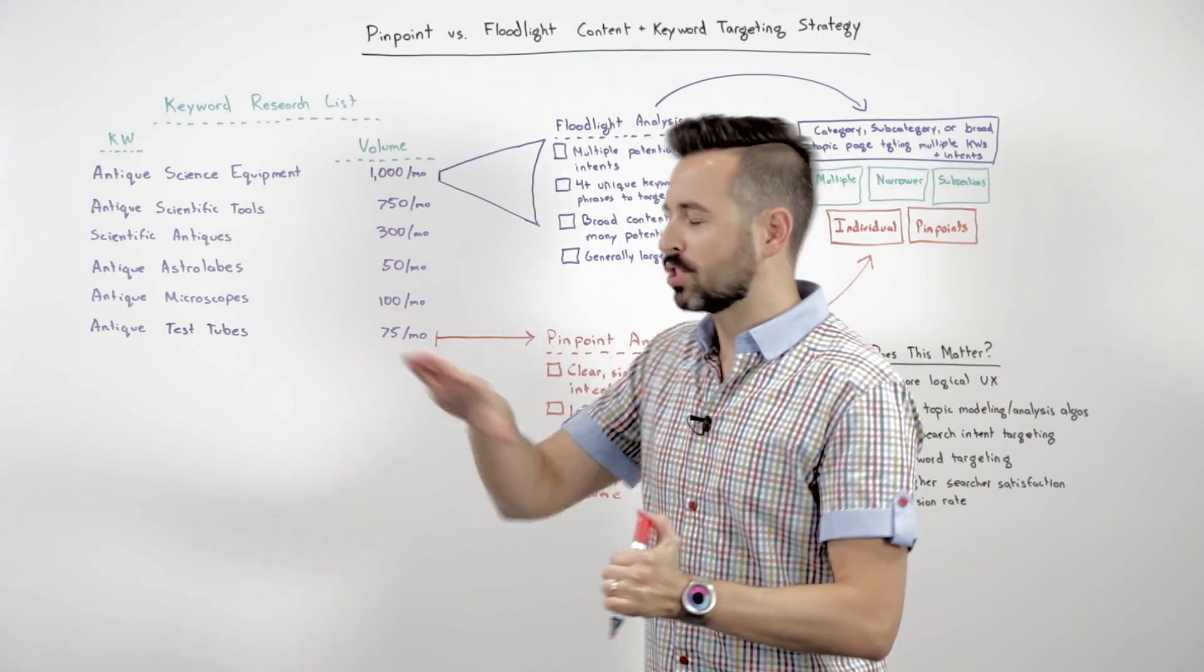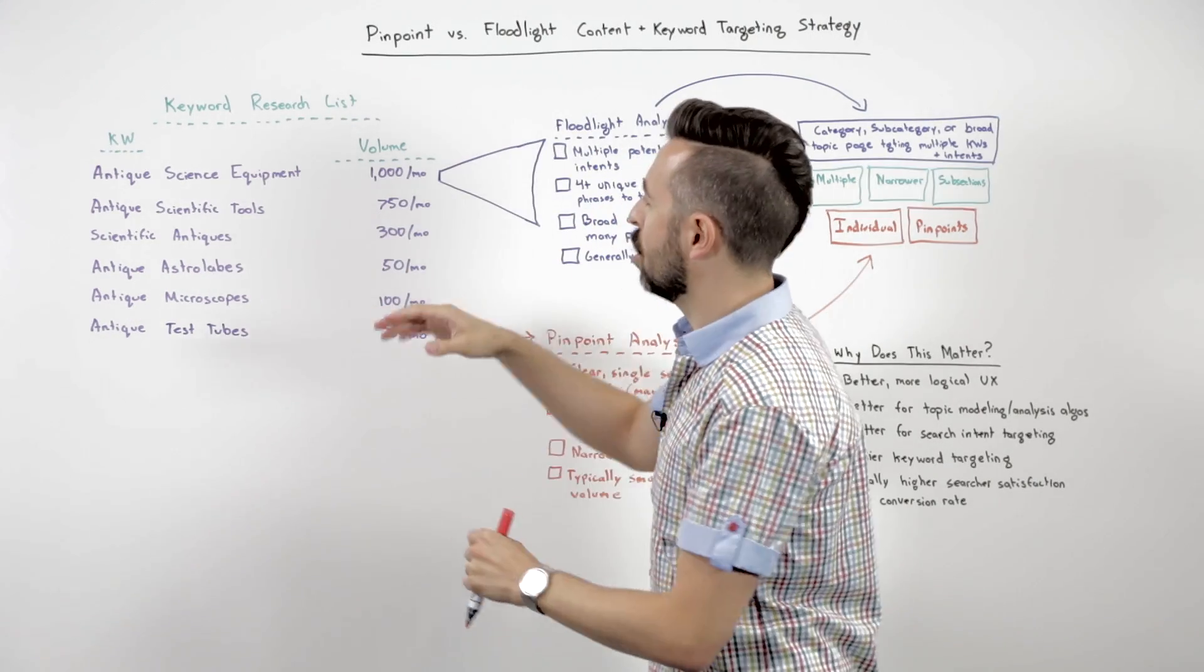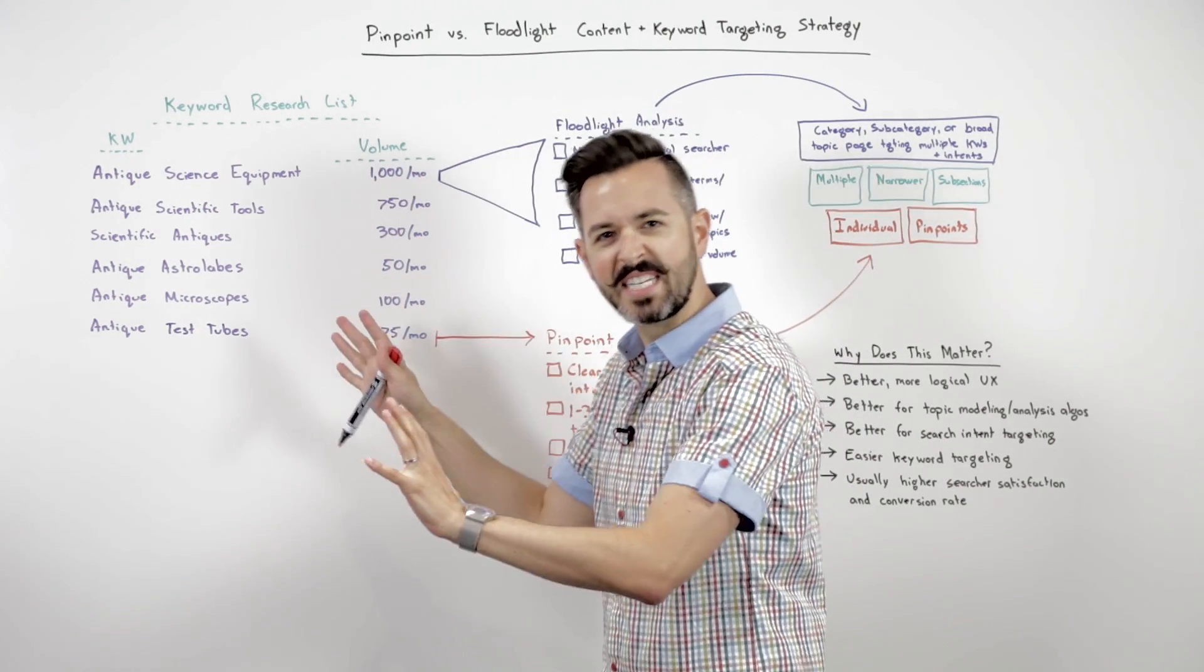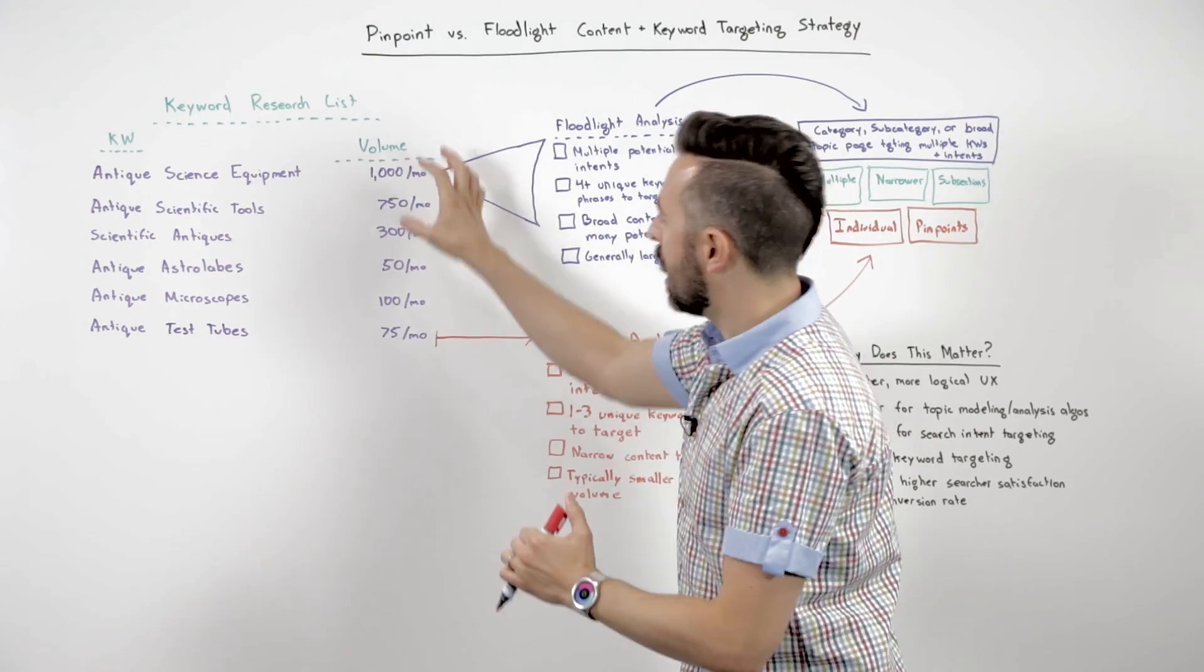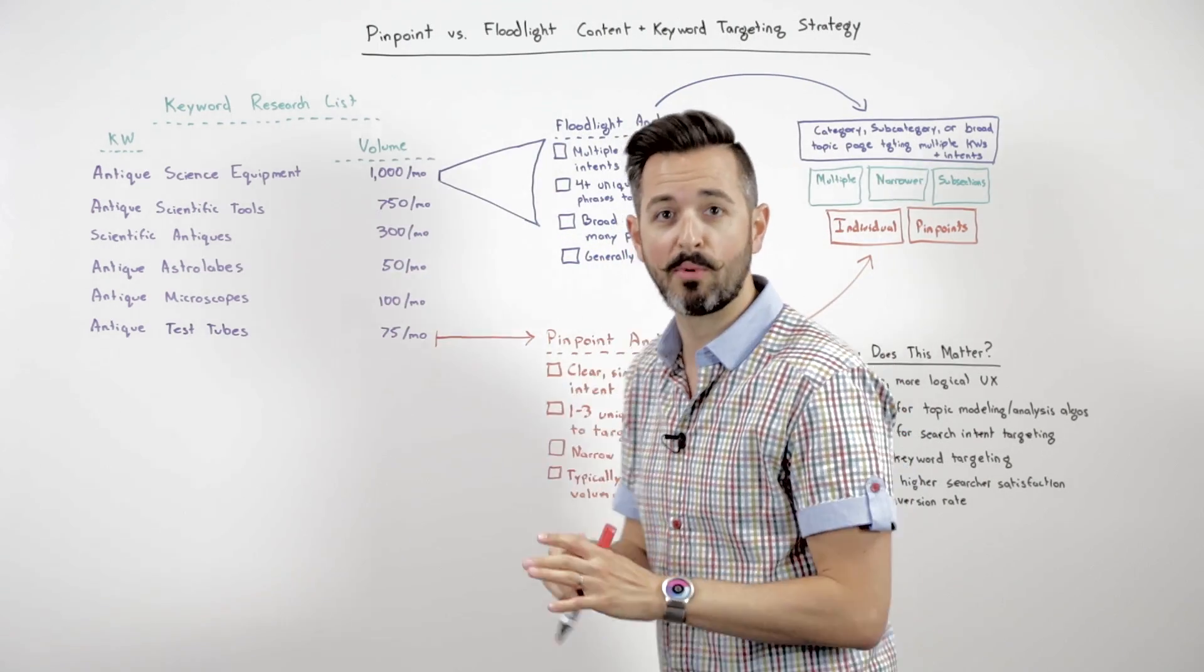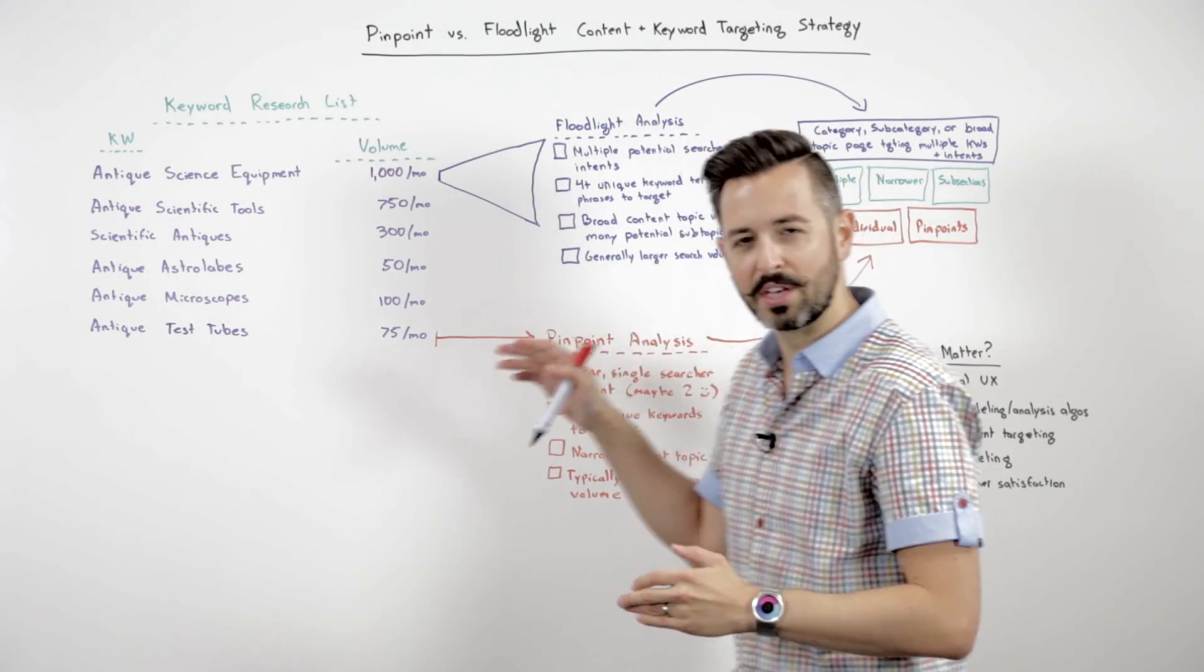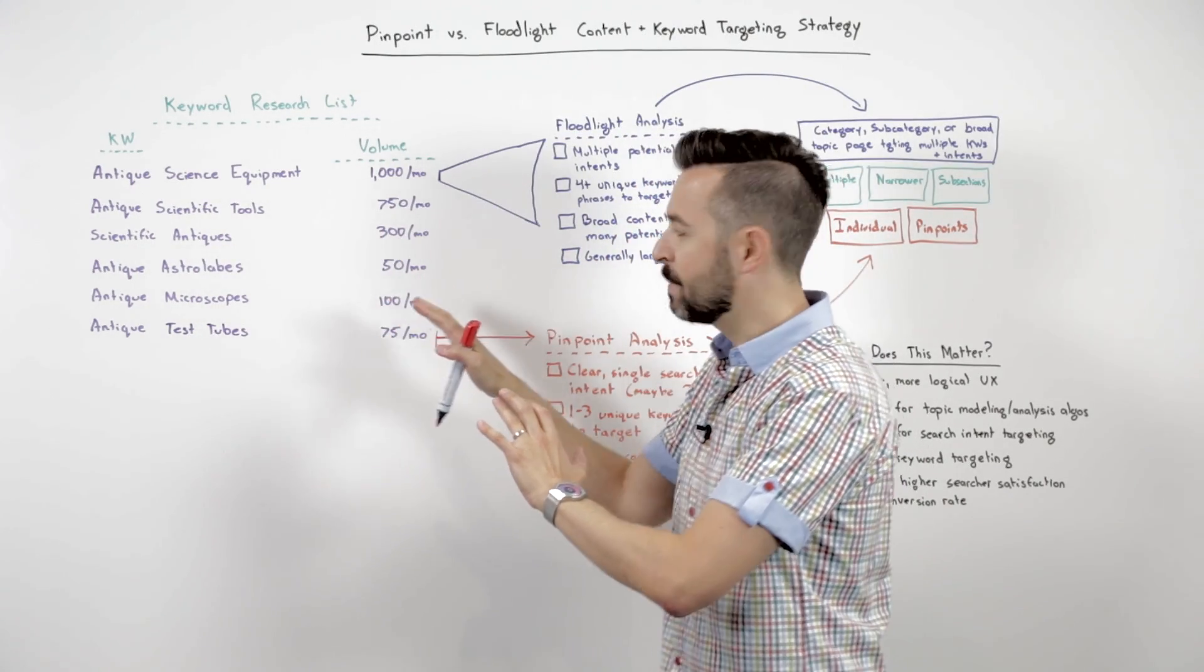Let's talk through this. You're going through and doing some keyword research, trying to figure out which terms and phrases to target. You might look down a list like this. I'm using an example here around antique science equipment. You see these various terms and phrases. You've got your volume numbers, probably lots of other columns. Hopefully you've watched the Whiteboard Friday on how to do keyword research like it's 2015 and not 2010. I'm simplifying here for the purpose of this experiment.